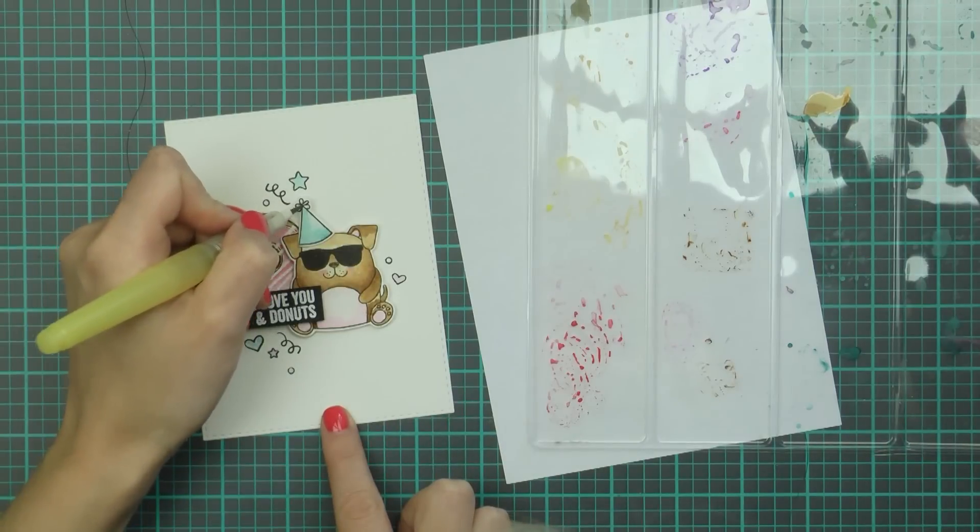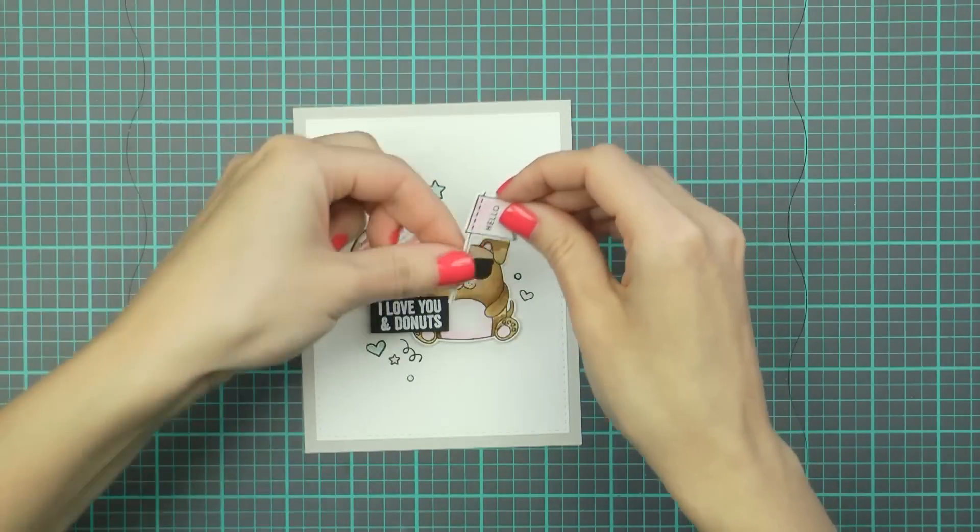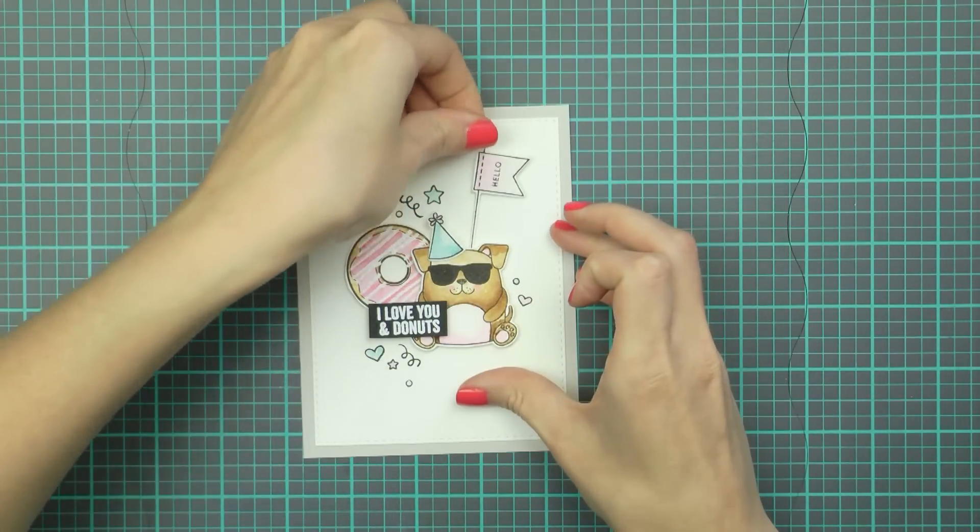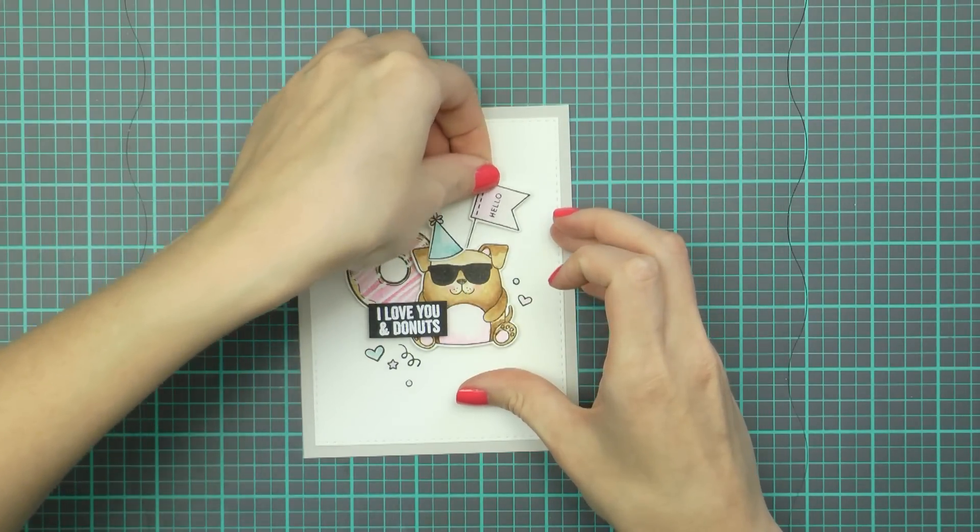Now I still felt this card was a little empty so I stamped and die cut a banner with the hello stamped onto it and tucked that behind the puppy.